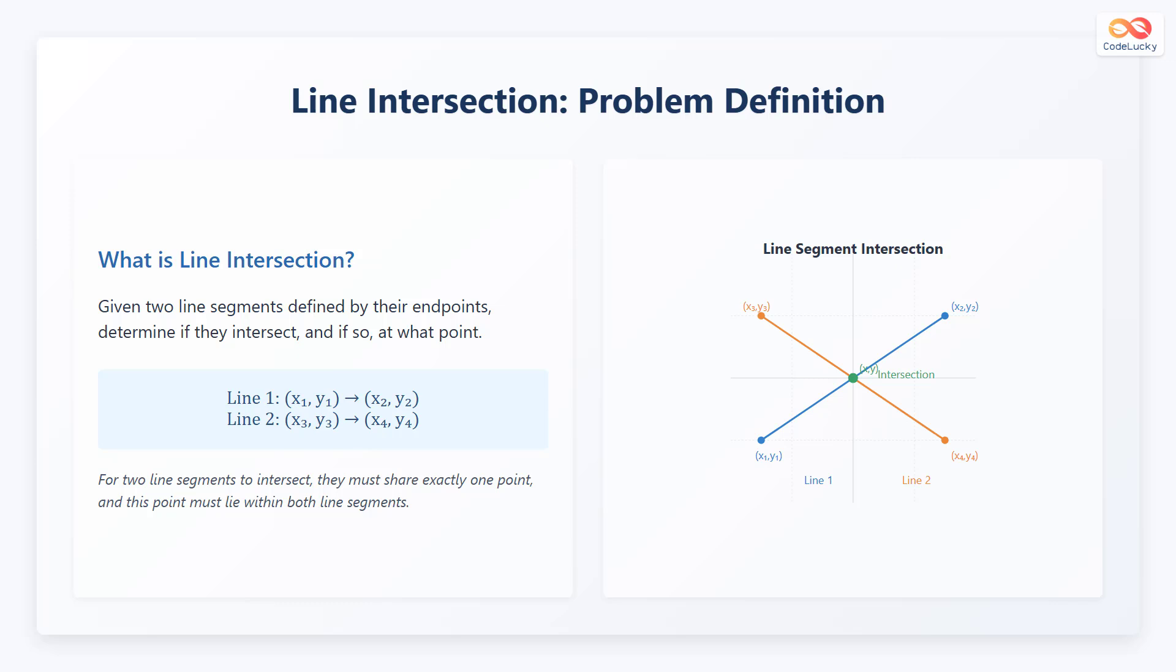For two line segments to intersect, they must share exactly one point, and this point must lie within both line segments.